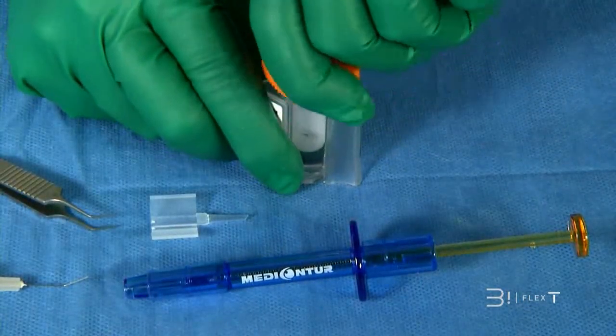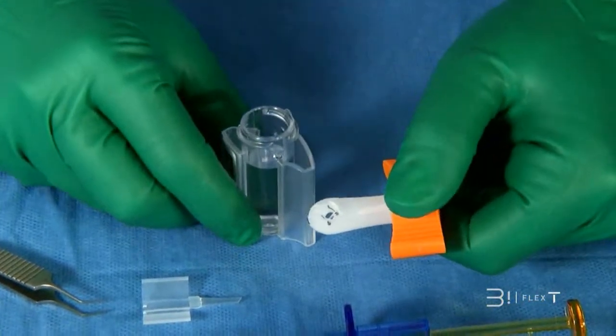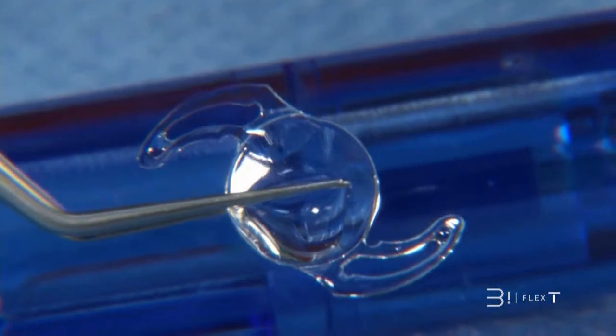Unscrew the stopper of the flask. Carefully extract the top shaft supporting the implant. Delicately seize the biflex implant so as to preserve optic quality.